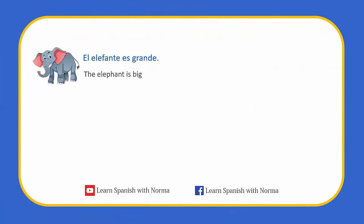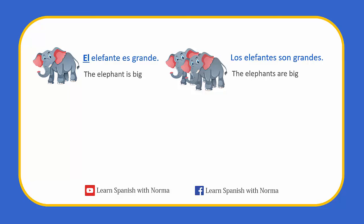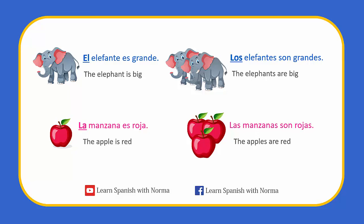Let's keep practicing. Keep in mind that in Spanish, all nouns have gender. El elefante es grande. The Spanish word for elephant is elefante. Elefante is a masculine word in Spanish, that's why we use the definite article el. Los elefantes son grandes — we use los because elefantes is a masculine plural word. La manzana es roja. The Spanish word for apple is manzana. Manzana is a feminine word, that's why we use la. Las manzanas son rojas — we use las because manzanas is a feminine plural noun.